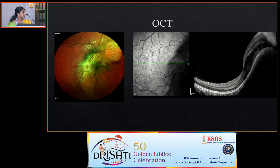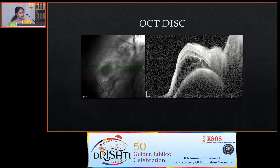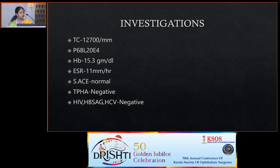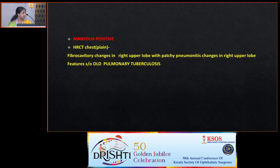OCT in the juxtapapillary area showed choroidal elevation, subretinal fluid, and cystoid intraretinal edema. Basic blood investigation showed normal ESR, but Mantoux came positive. HRCT showed fibrocavitary changes in right upper lobe with patchy pneumonitis suggestive of pulmonary tuberculosis. FFA and ICG showed blocked fluorescence corresponding to hemorrhages with increased fluorescence and late-phase disc leak. Provisional diagnosis was ocular tuberculosis.